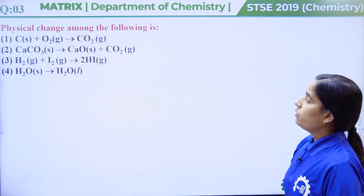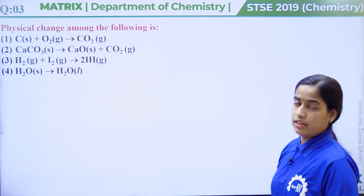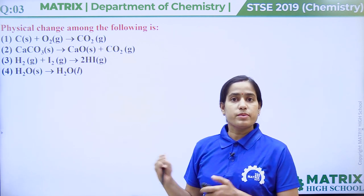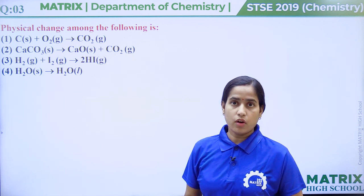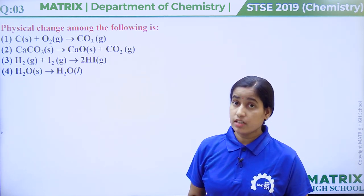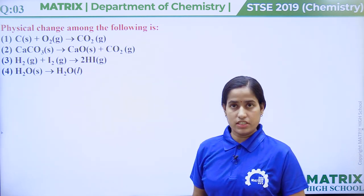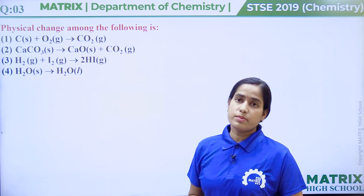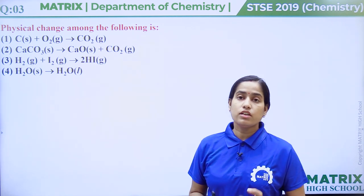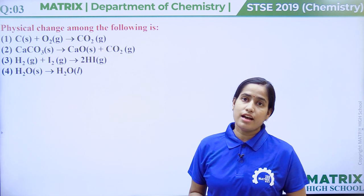Question number 3: Physical change among the following is. Generally, in a physical change, no new substance is formed. Only physical properties like physical state, shape, size, color, texture, etc. are changed. But in a chemical change, a new substance is always formed and chemical properties are changed.